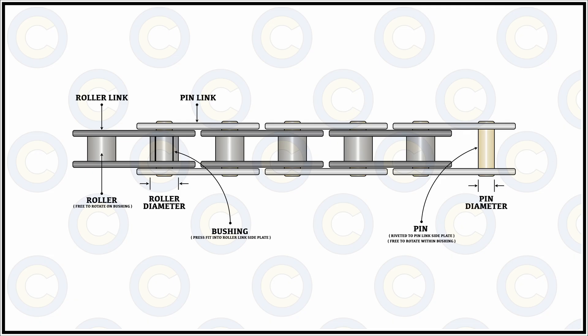The roller link has two adjacent rollers, and the pin link has two adjacent pins. The roller must be free to rotate because the chain does not need to be rigid; when the roller engages with the sprocket teeth or drive teeth it should be free to rotate and well lubricated. The roller rotates on the bushing, which is visible within this construction.